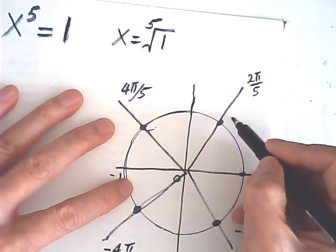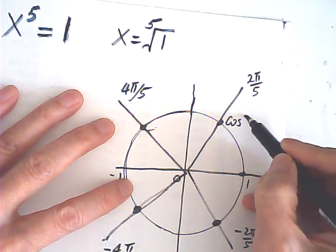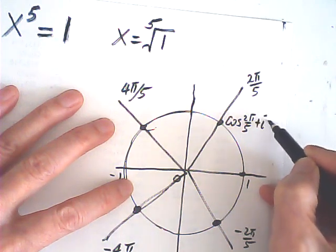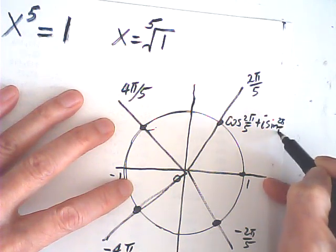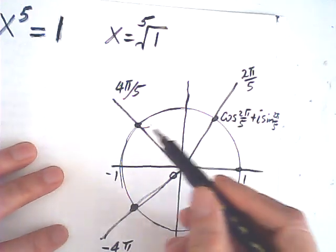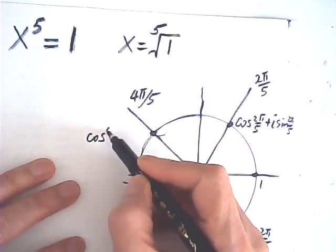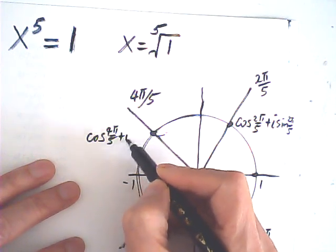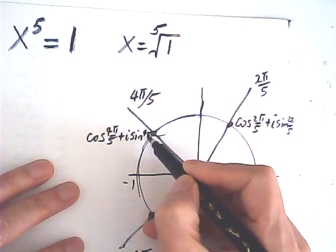So this point is cosine 2 pi over 5 plus i sine 2 pi over 5. This point is cosine 4 pi over 5 plus i sine 4 pi over 5.